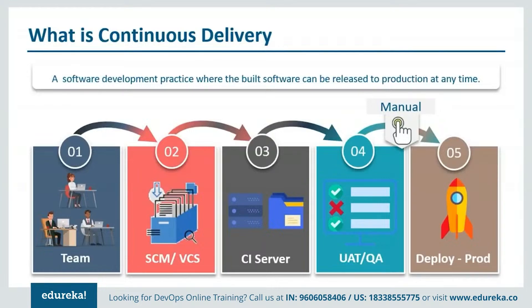In continuous delivery, you just manually approve the code and then it gets deployed onto the production servers. The QA teams automatically test each and every build, and if it passes those tests the code is ready to be deployed. If any feature is not working, it is sent back to the teams to fix the bug, and then it is deployed onto the production site. This increases quality and velocity and makes the team more efficient. Continuous delivery has just one step that has to be done manually — deploying onto the production servers.